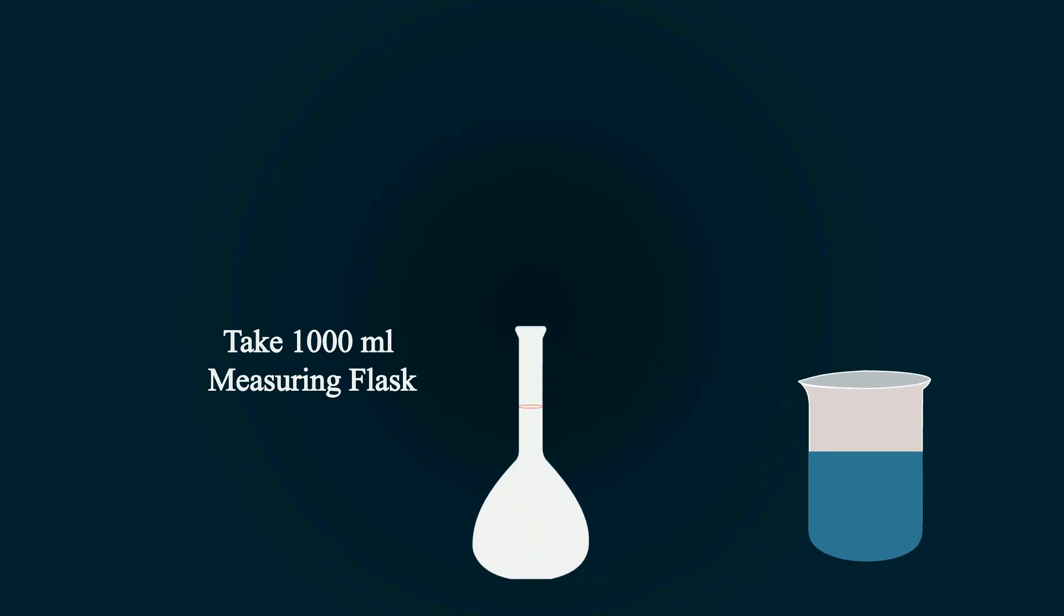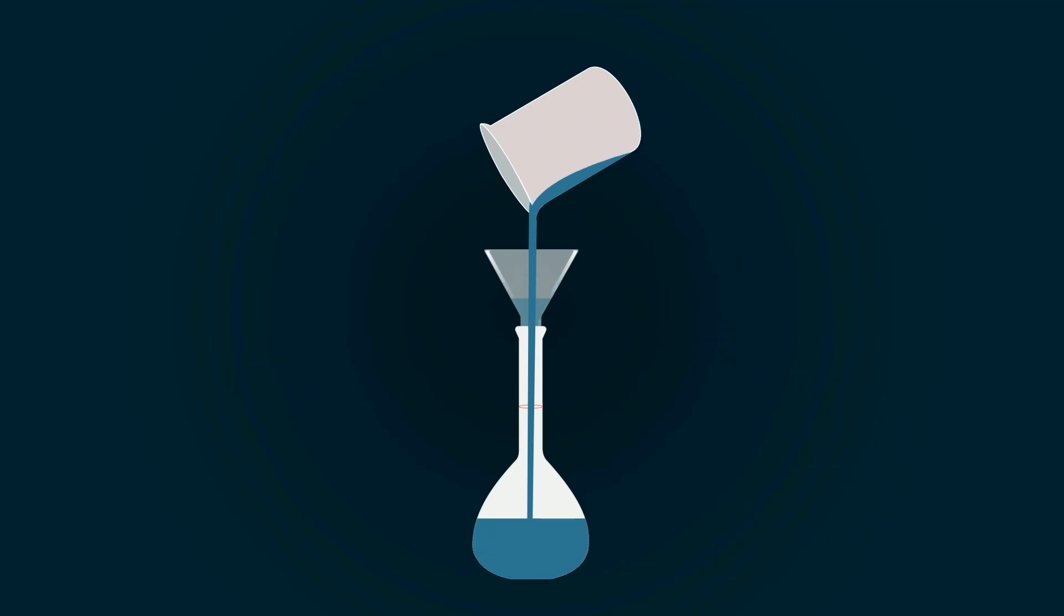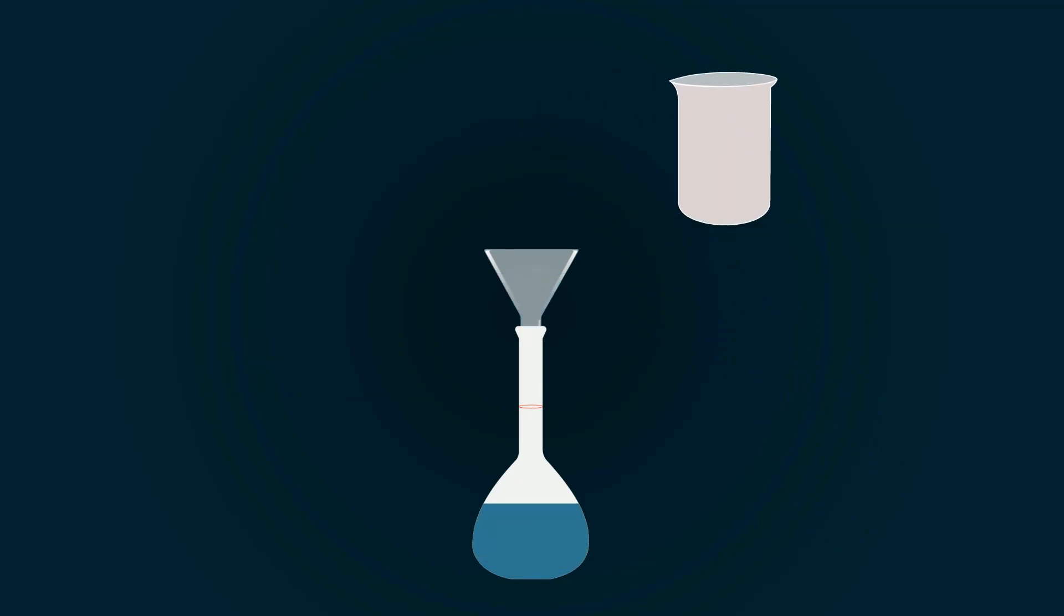Now take a volumetric flask of 1000 milliliters and put a funnel on the top of the flask. Start pouring all the solution into the volumetric flask. You have to fill it up to the 1000 milliliter point.